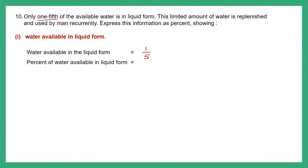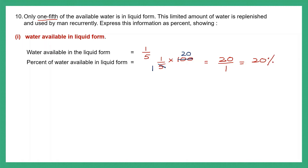We are asked to find the percent of water available in the liquid form. So we take this one-fifth and multiply it by 100. Let's cancel. 5 1s are 5, 5 2s are 10, 5 into 20 is 100. Now let's multiply: 1 into 20 is 20, the denominator is 1, so 20 by 1 is 20. Water available in liquid form is 20%.